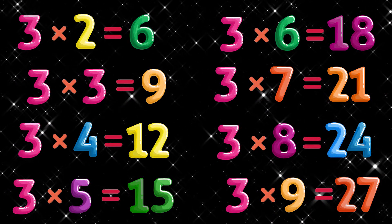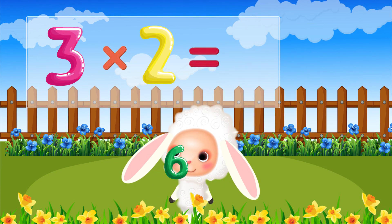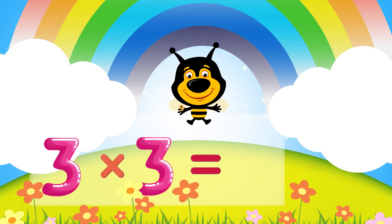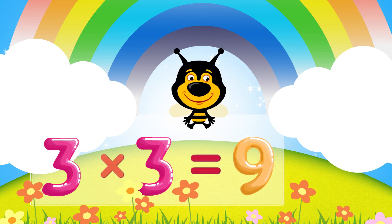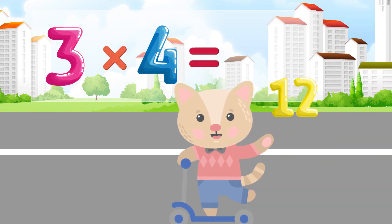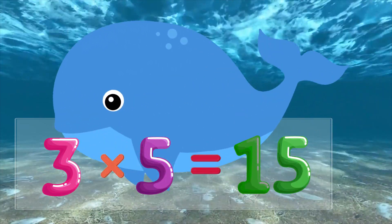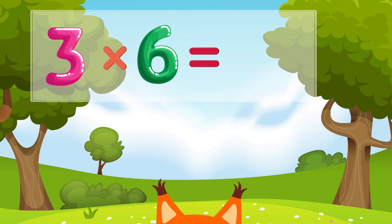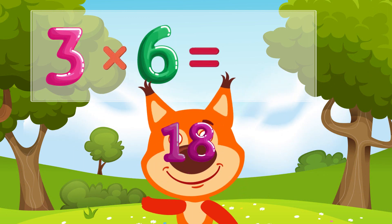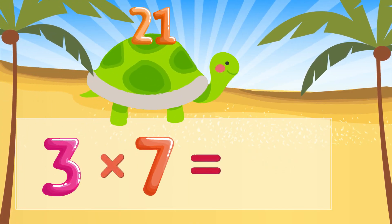Let's sing again. Three times two is six, three times three is nine, three times four is twelve, three times five is fifteen, three times six is eighteen, three times seven is twenty-one.